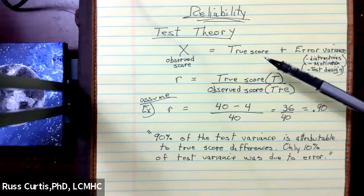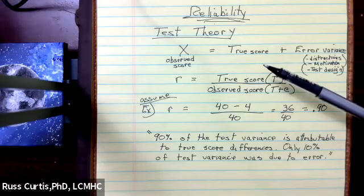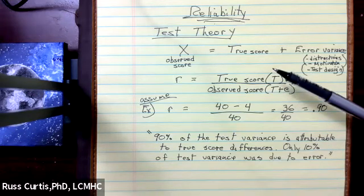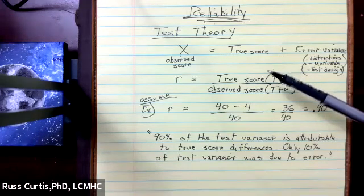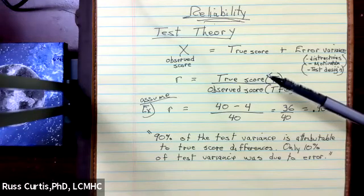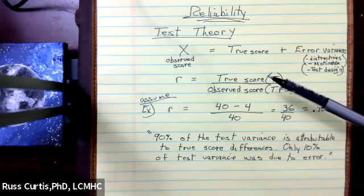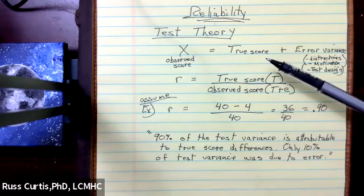Now, theoretically, we could get a true score by having a client take a test repeatedly. And actually, it would be an infinite number of times and then take the mean, get the average of that infinite number of times. Now, of course, we're not going to have somebody take a test infinite number of times. But with some tests, if you take it three or four times and then you get the average, we're probably getting closer to a true score.